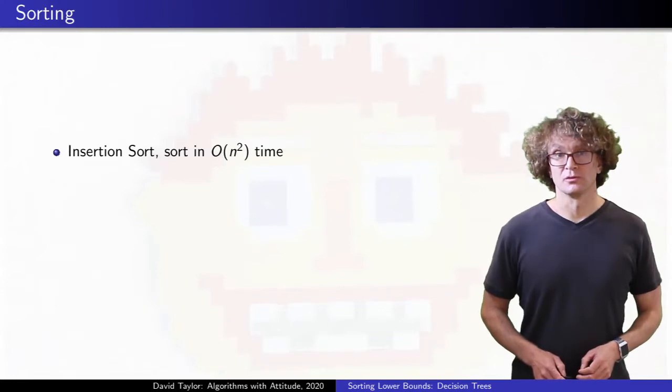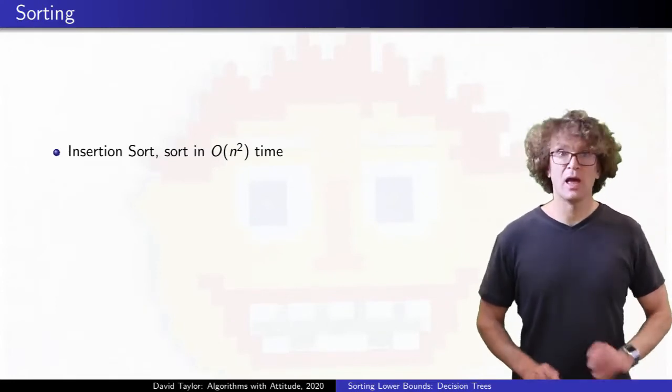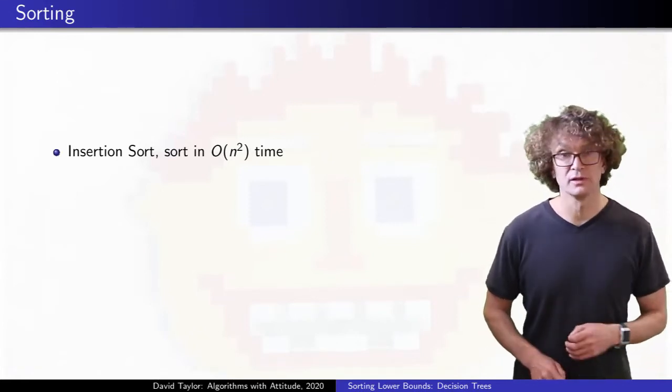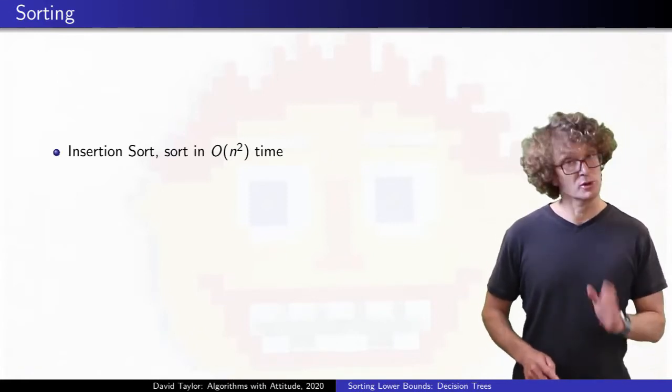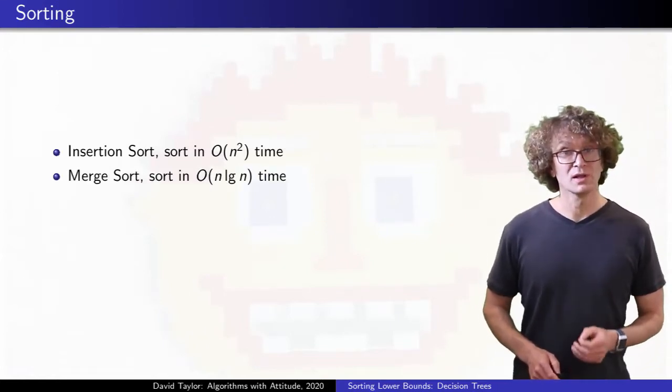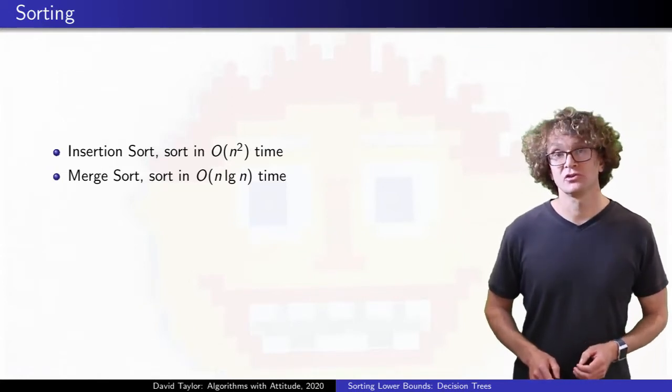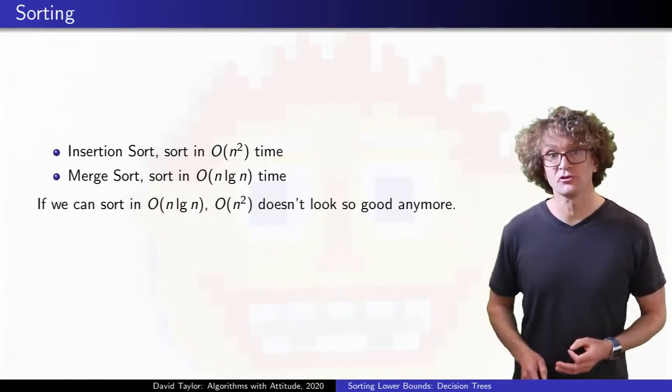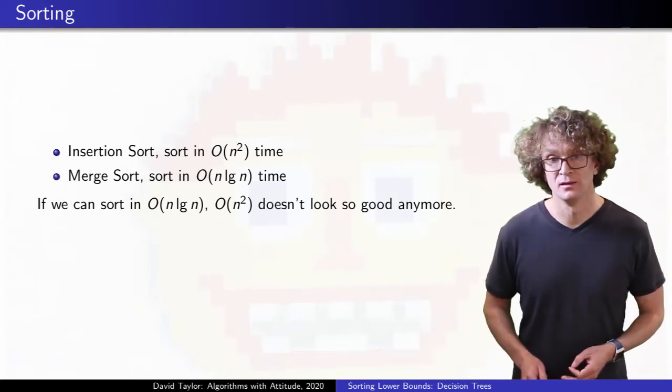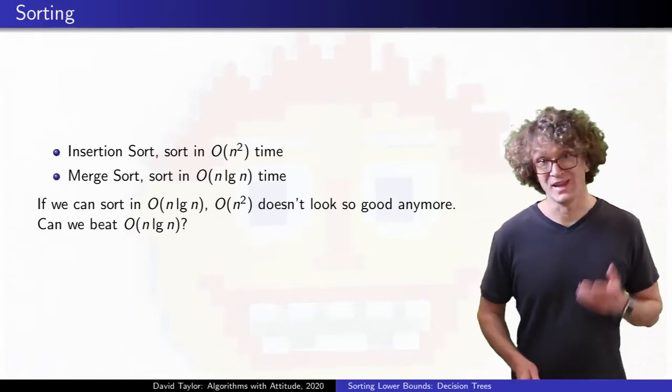Let's say the first sorting algorithm you learned is insertion sort, and afterwards you're like great, now I know how to sort, it's got to be useful. So you slap it into your LinkedIn and Tinder profiles, but no job offers. Then you learn merge sort, and you realize that insertion sort isn't that great. Insertion sort's n squared doesn't look so good once you know that you can do better and sort in n log n. But is n log n good? Well, can you do better?